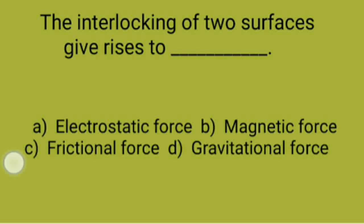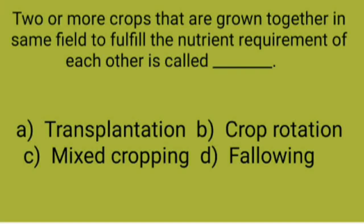Two or more crops that are grown together in the same field to fulfill the nutrient requirement of each other is called: A: Transplantation, B: Crop rotation, C: Mixed cropping, D: Fallowing. Correct option is C, mixed cropping.